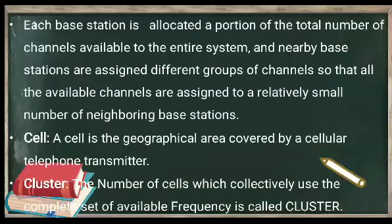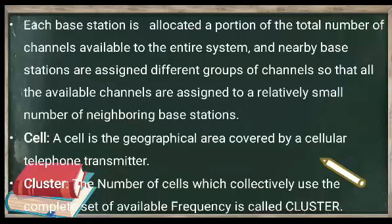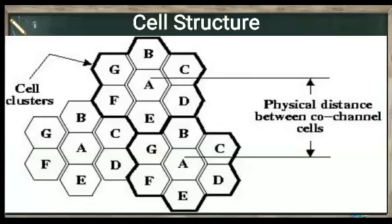What is a cell? A cell is the geographical area covered by a cellular telephone transmitter. It is a geographical area denoted by a hexagonal shape. That area is named as a cell. A cluster is a group of cells used collectively. This is the cell structure in a cellular communication system — the different hexagonal shapes labeled A, B, C, D are different cells, and the group of cells is known as a cluster.